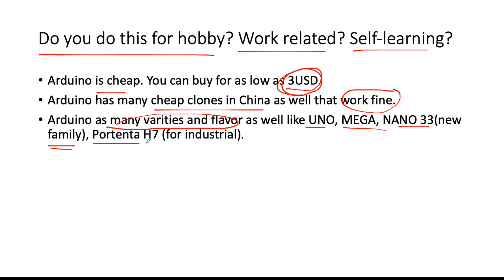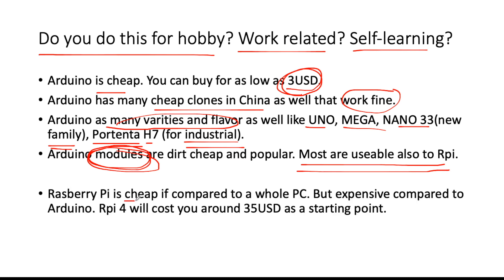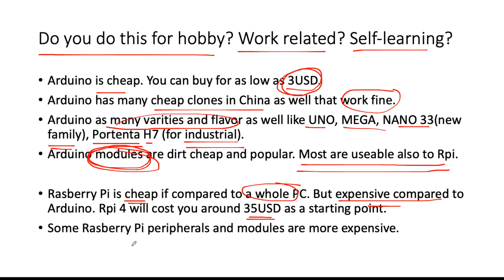The Arduino community also has many inexpensive and popular modules like sensors, communication modules, and other peripherals — most of which are usable with Raspberry Pi as well. On the other hand, Raspberry Pi is cheap compared to a full computer, but more expensive than an Arduino, with a starting price of around 35 USD. Raspberry Pi peripherals also tend to be more expensive than the low-cost Arduino-compatible modules.